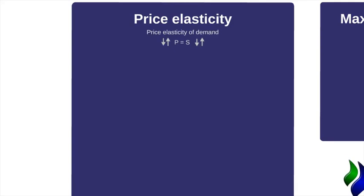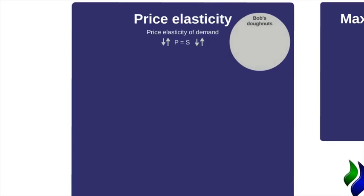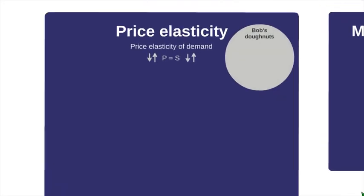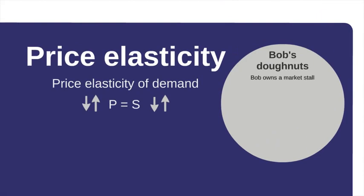I'll give you an example to illustrate this better — the example of Bob and his doughnuts. Bob owns a market stall in the local market street where he's been selling his doughnuts for many years. He sells his doughnuts for one dollar each, so for every doughnut he sells he generates one dollar in revenue, and he sells 200 doughnuts a day, generating 200 dollars in revenue.